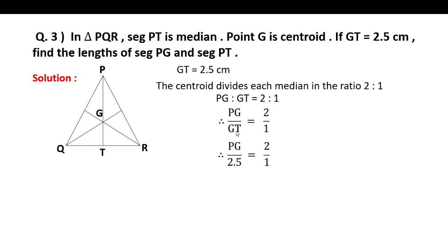Therefore, PG upon GT is equal to 2 upon 1. GT value is 2.5. PG into 1 equals 2.5 into 2. PG equal to 2 into 2.5. Therefore, PG equal to 5.